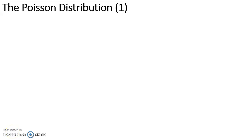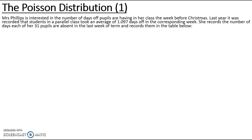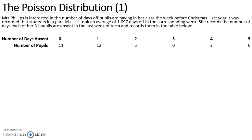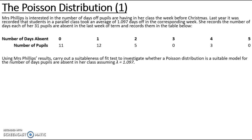In this example we're going to look at using a chi-squared distribution to test the goodness of fit of a Poisson distribution. Mrs Phillips is interested in the number of days off pupils are having in her class the week before Christmas. Last year it was recorded that students in a parallel class took an average of 1.097 days off in the corresponding week. She records the number of days each of her 31 pupils are absent in the last week of term, and we are asked to carry out a goodness of fit test to investigate whether a Poisson distribution with lambda 1.097 is a suitable model.